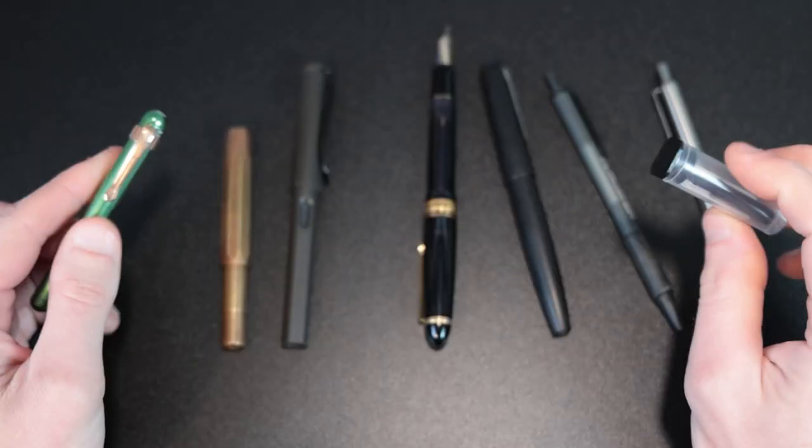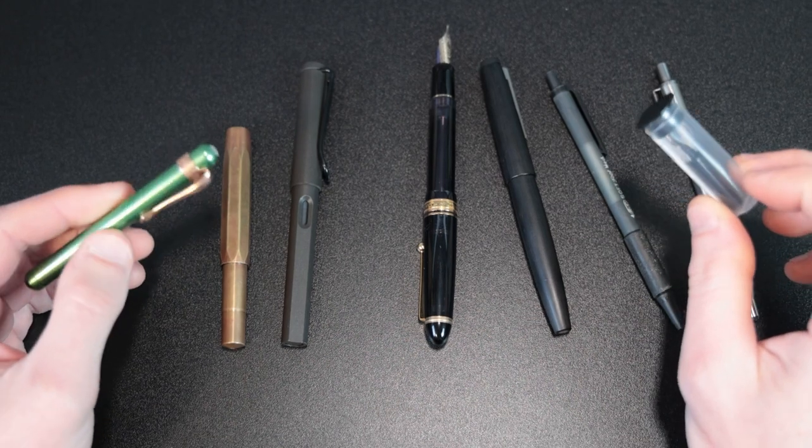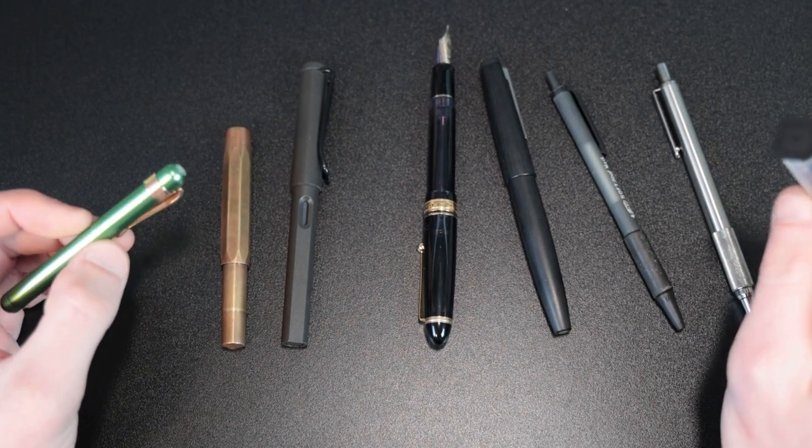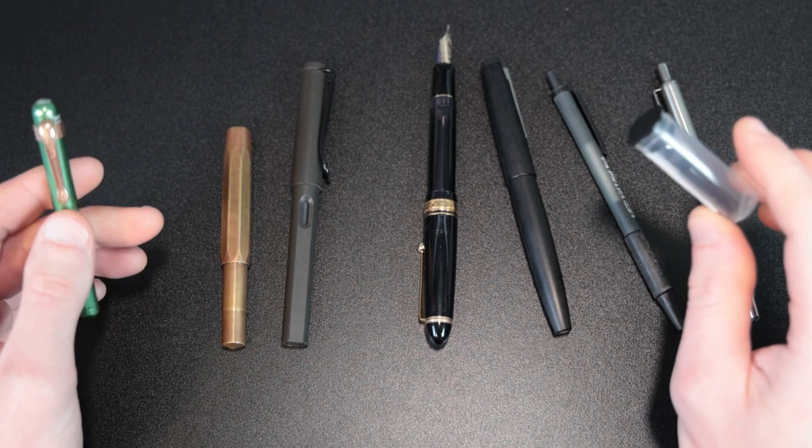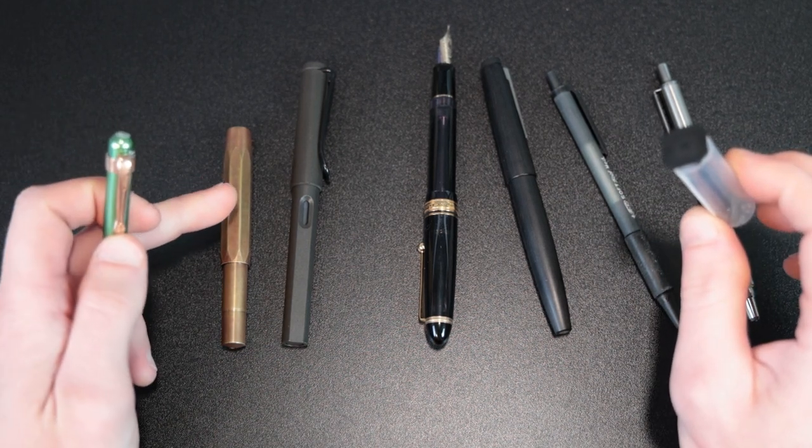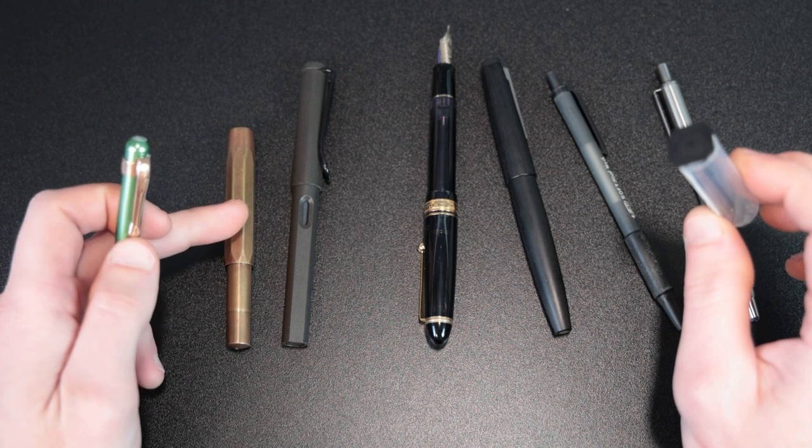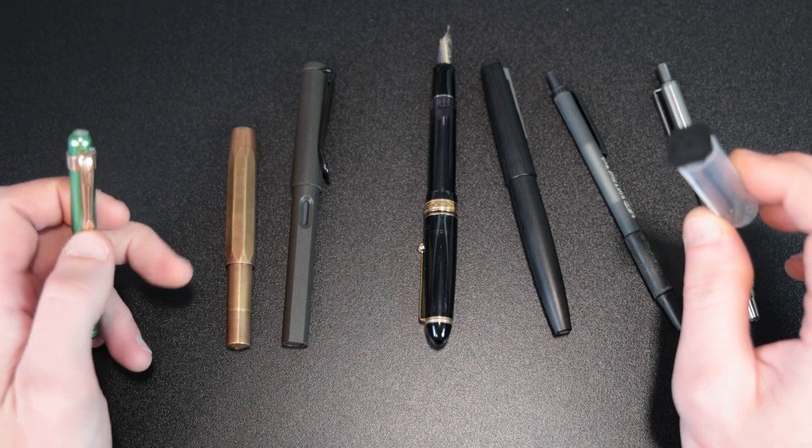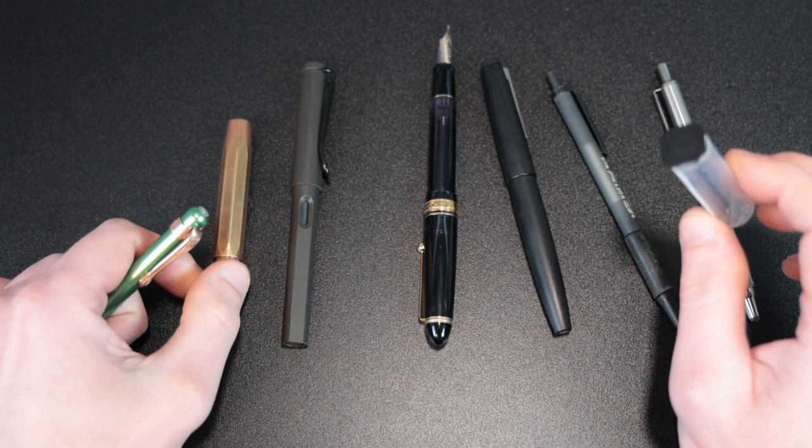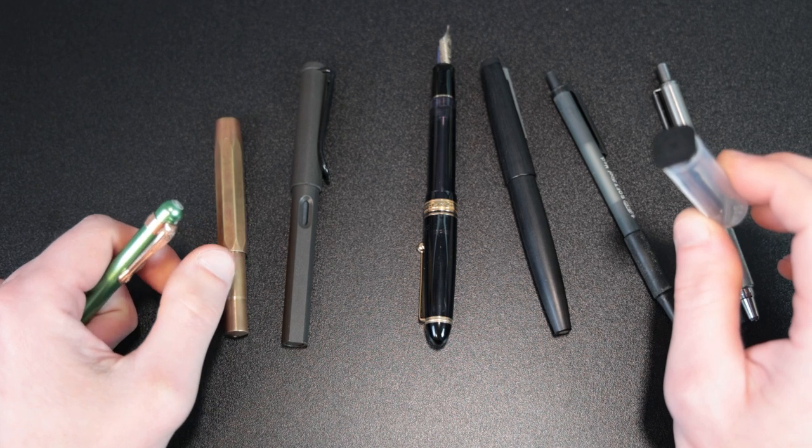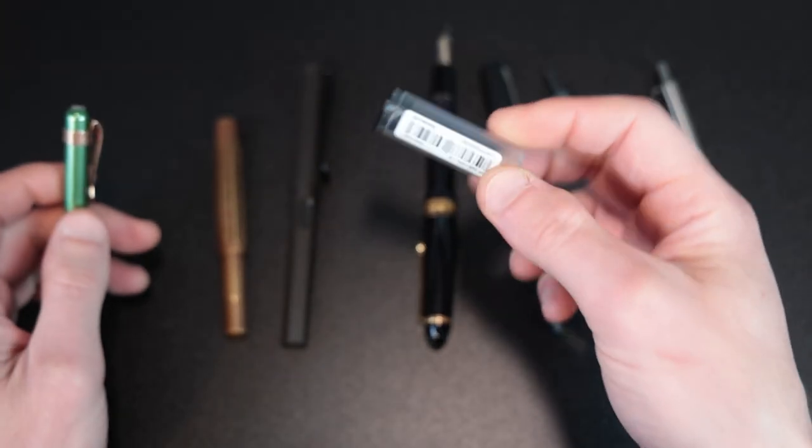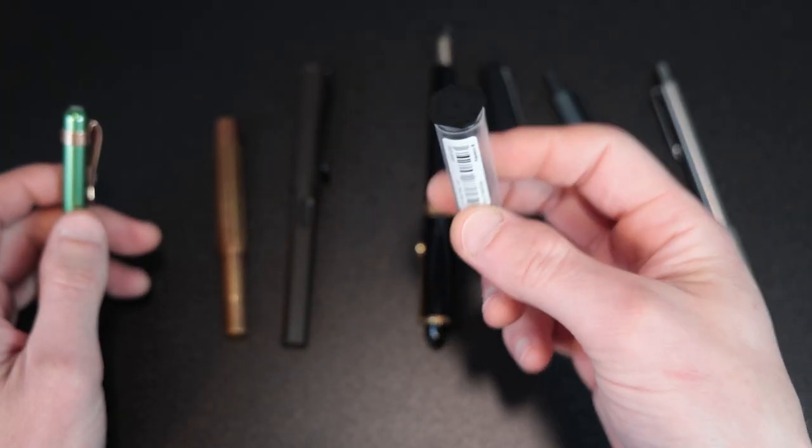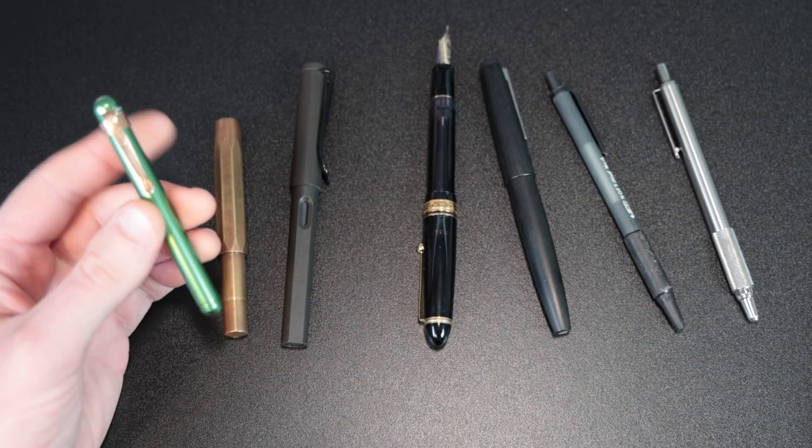You can get golden Caveco nibs. They're about 160 bucks, 150 bucks, depending on where you get them. I've never used one of their gold nibs. Their steel nibs have been kind of hit or miss for me. I think on, I can't remember if it was this one or my plastic Caveco Sport, it had some hard starting problems and a little bit of a baby's bottom on it. I had to polish it out.